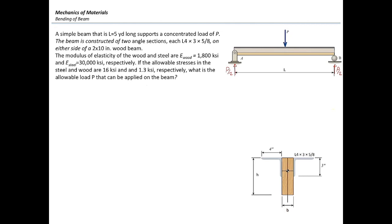Since this is a composite beam, we need to transform it into a section made from one material. It's easier to convert to steel because the wood is just one component, whereas the two steel L-shapes consist of four rectangles total — converting those to wood would be more complicated. We convert the weaker material to the stronger, so the n-factor should be less than 1: n = E_wood / E_steel = 1800 / 30000 = 0.06.